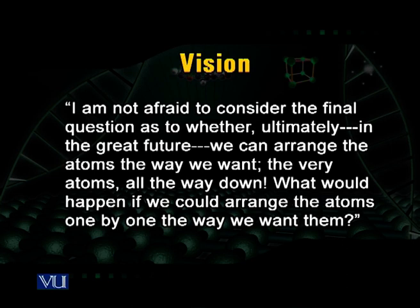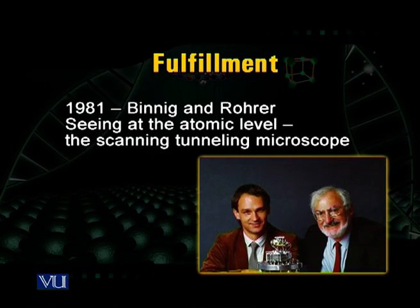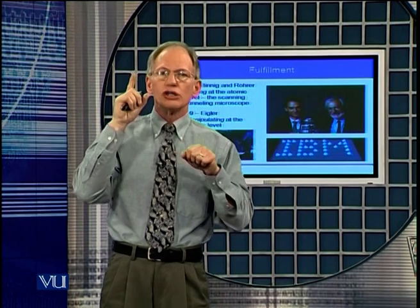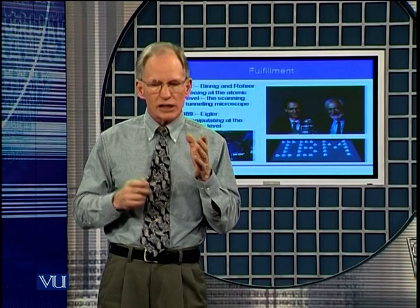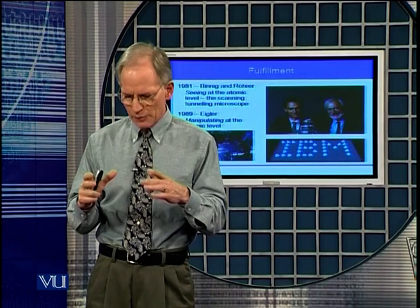That was 1959. If we add 22 years, we're in 1981. In 1981, Binning and Rohrer — who immediately got the Nobel Prize — developed a scanning tunneling microscope. A scanning tunneling microscope lets you see corrugation of atoms on a surface — you could see the atoms. So not many years after Feynman, you had an instrument developed that allowed you to see atoms on surfaces.